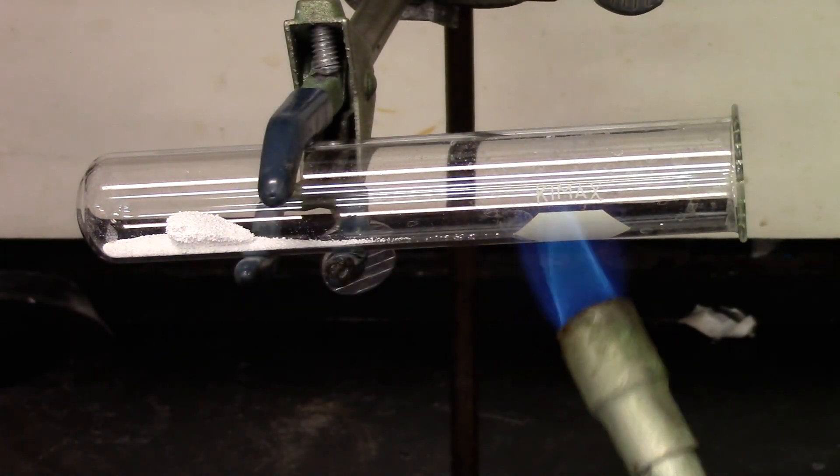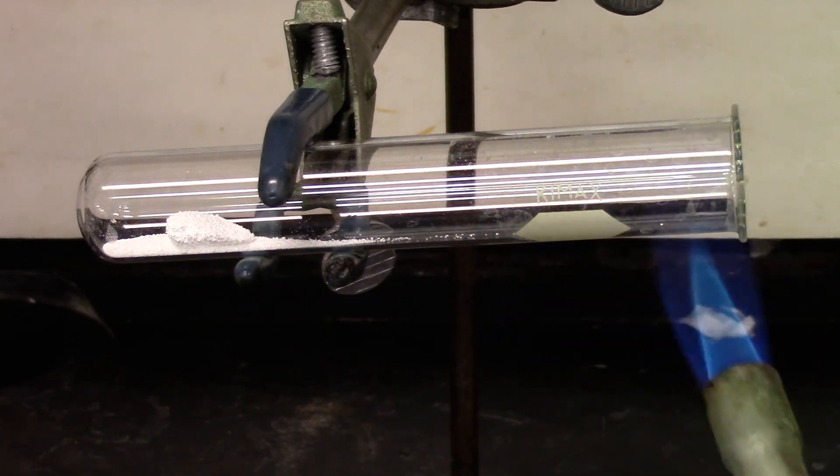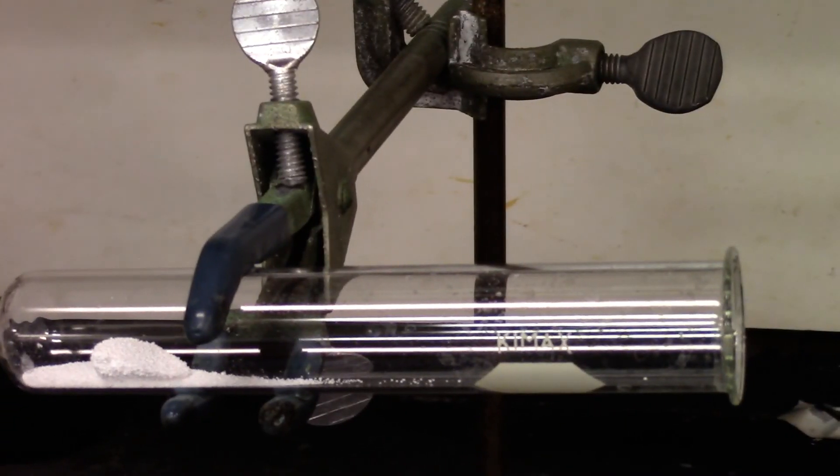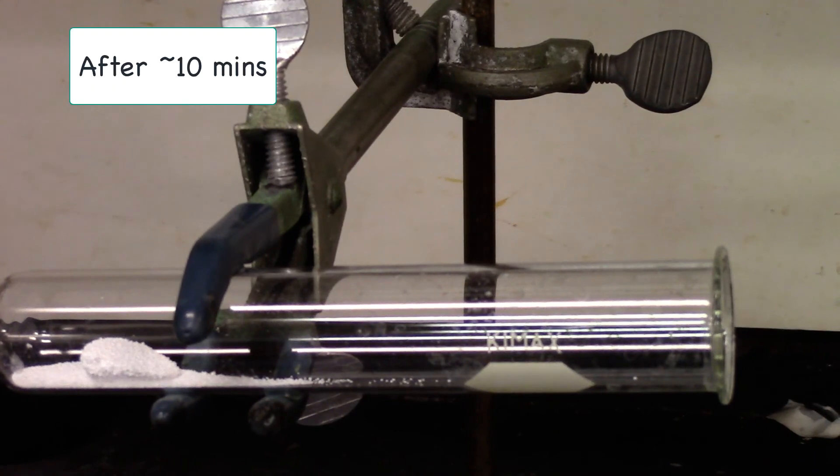If there is some plastic on the clamp, avoid heating the plastic. Otherwise it will catch fire. Now the test tube looks dry. I will let it cool down and weigh it.